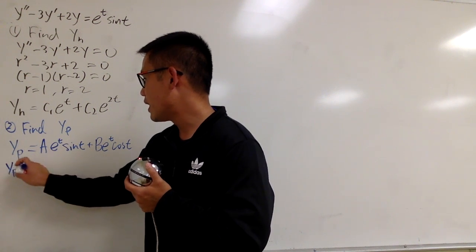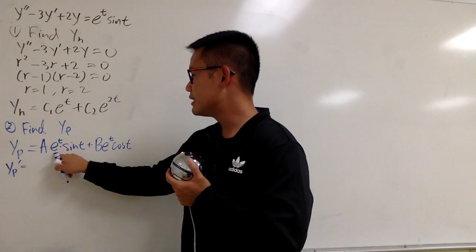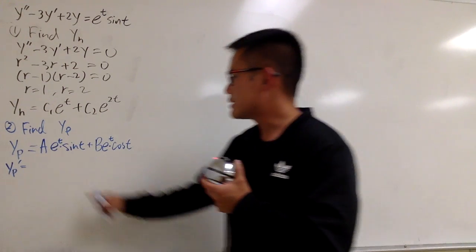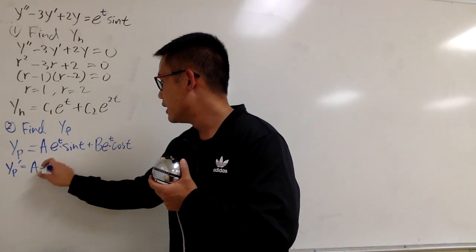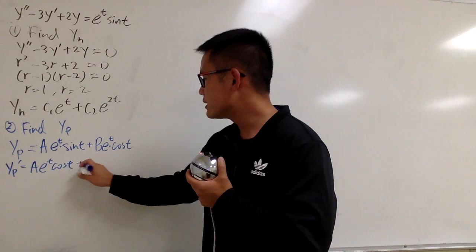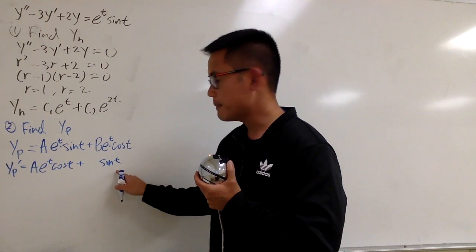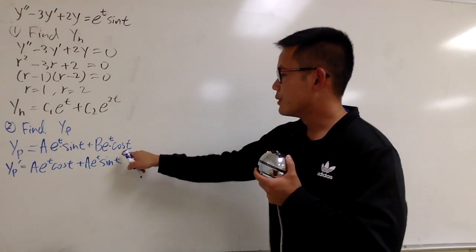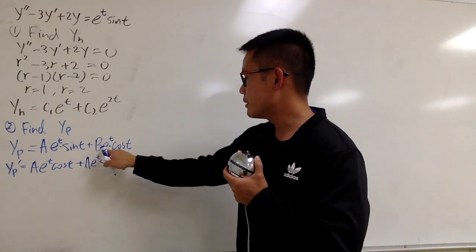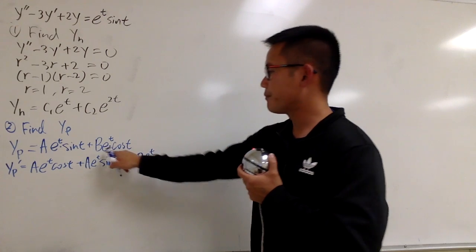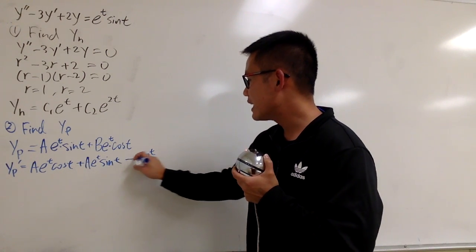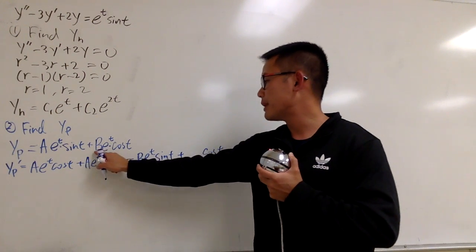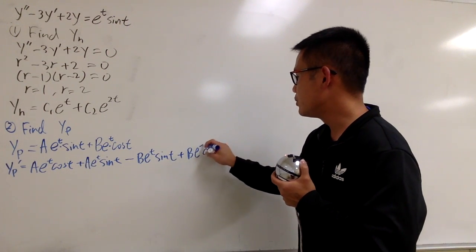Derivative in action. For yp', I'll look at ae^t as my first function and sine t as my second, and likewise be^t as first and cosine t as second — we have to do the product rule. So: keep ae^t times the derivative of sine t, which is cosine t; plus keep sine t times the derivative of ae^t, which is ae^t. Then for the second term: keep be^t times the derivative of cosine t, which is negative sine t; plus keep cosine t times the derivative of be^t, which is be^t.